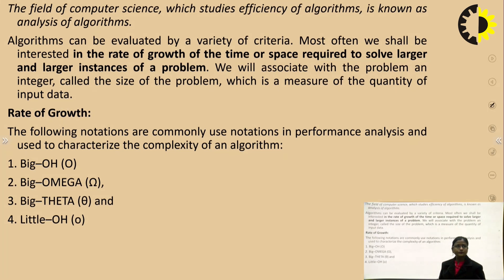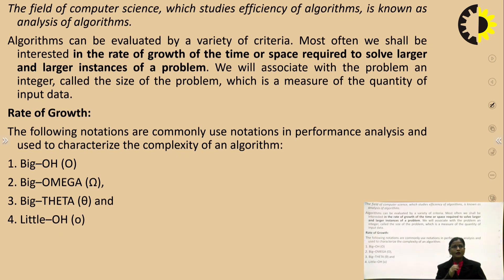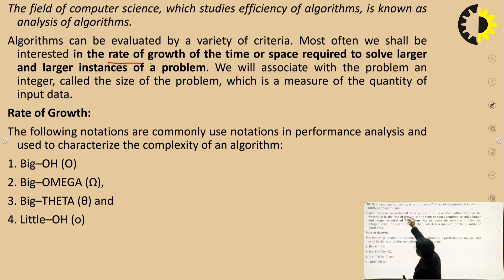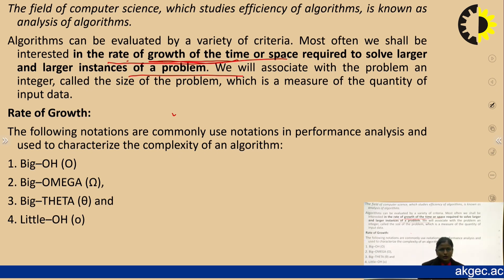The field of computer science that studies the efficiency of algorithms is known as analysis of algorithms. Analyzing means we determine the space complexity and time complexity. An algorithm can be evaluated by a variety of criteria; most often we are interested in the rate of growth of time and space required to solve larger and larger instances of a problem — that is, the asymptotic time complexity.